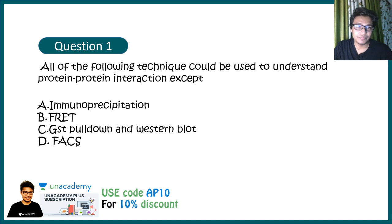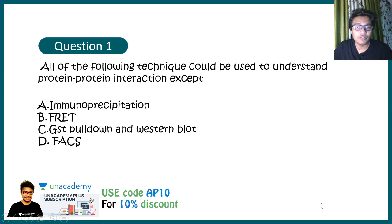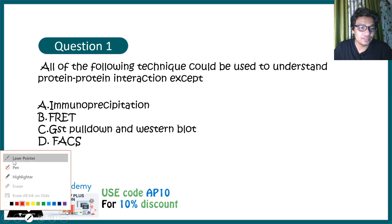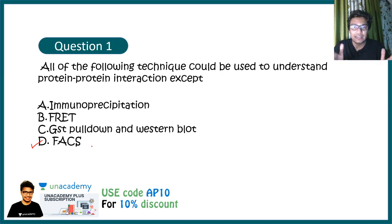Question one: All of the following techniques could be used to understand protein-protein interaction except — immunoprecipitation, FRET, GST pulldown followed by western blot, and FACS. The correct answer is FACS — fluorescence-activated cell sorting — which is used to sort one cell type from a heterogeneous mixture and cannot detect protein-protein interaction.